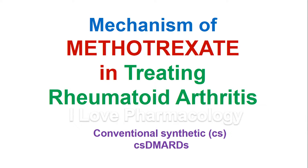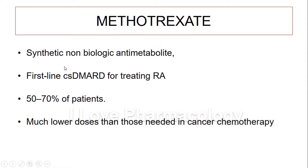Hello guys, welcome to I Love Pharmacology. Today you're going to learn about the mechanism of methotrexate in treating rheumatoid arthritis — what is the role of methotrexate in treating rheumatoid arthritis. It is a csDMARD, which means it is a conventional synthetic disease-modifying anti-rheumatoid drug. Methotrexate is a synthetic non-biological anti-metabolite.